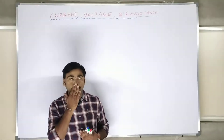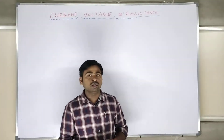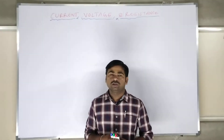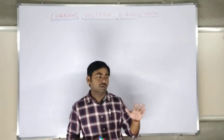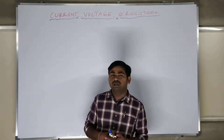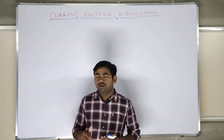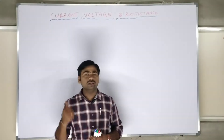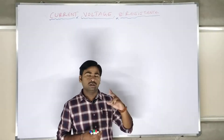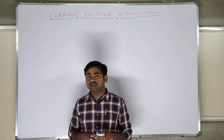In the college textbook definition, current is the rate of change of charge, or electrons flowing through a conductor. But that definition alone is not enough. I will explain both current and voltage by taking a water tank example — a ripple tank example.